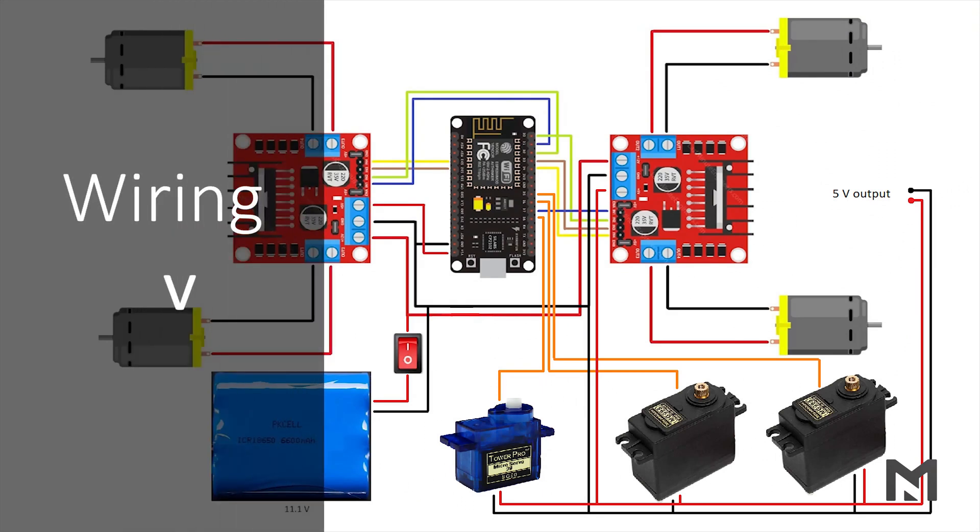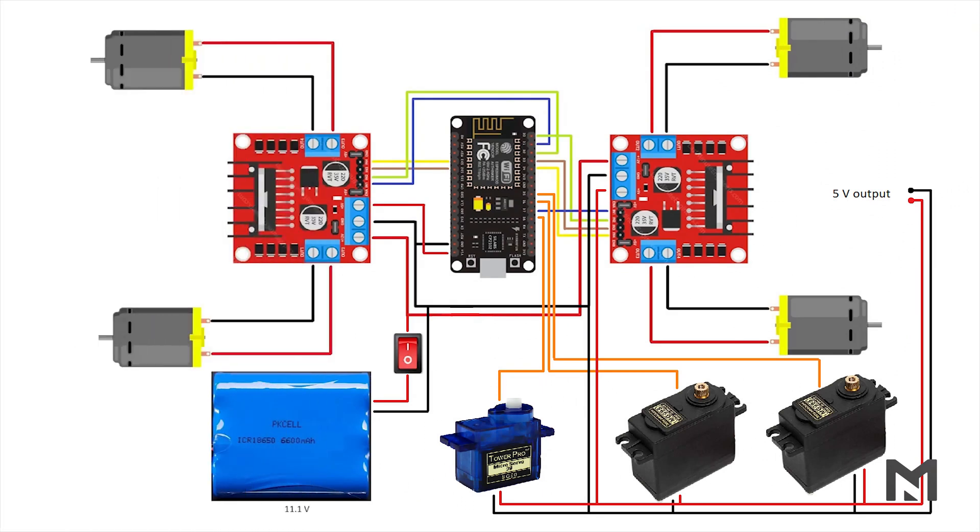The wiring of the circuit is done as per the circuit diagram. It is same as that of the previous one, only the servos are installed. The code and app are same as that of the mecanum wheel robot. To view the coding part, click on the i button.